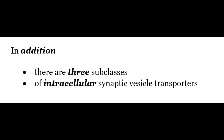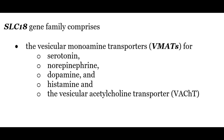In addition to these two, there are three subclasses of intracellular synaptic vesicle transporters. The SLC18 gene family comprises the vesicular monoamine transporters, also known as the VMATs, for serotonin, norepinephrine, dopamine, histamine, and the vesicular transporters for acetylcholine.